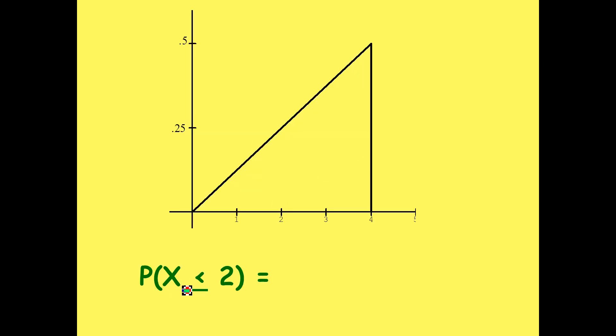We want to find the probability of the random variable x having a value of 2 or less. If we want to find the area under the curve from 0 to 2, because 0 to 2 are all the values less than or equal to 2, we notice that we need to find this area around here. And look, it's a triangle. Well, we can easily find the area of a triangle.